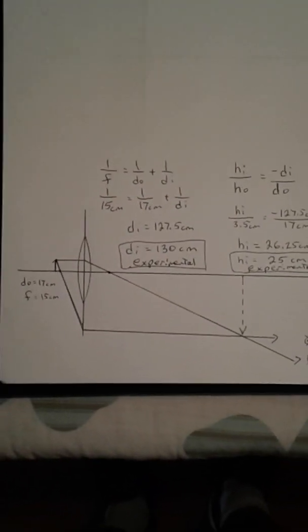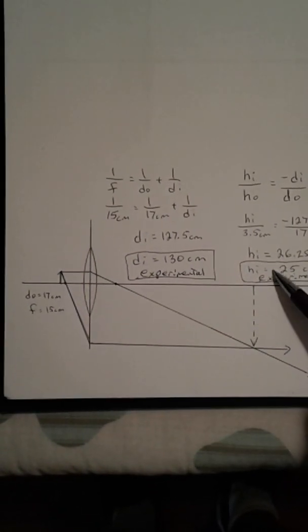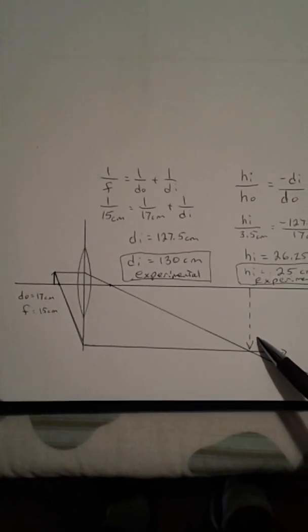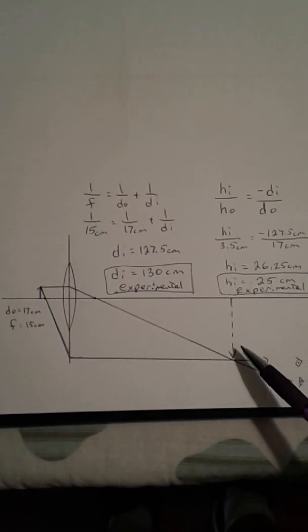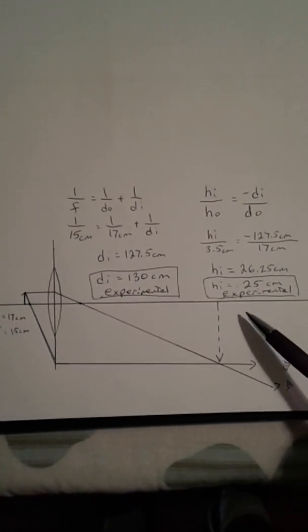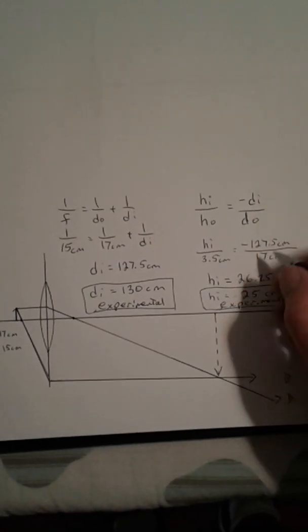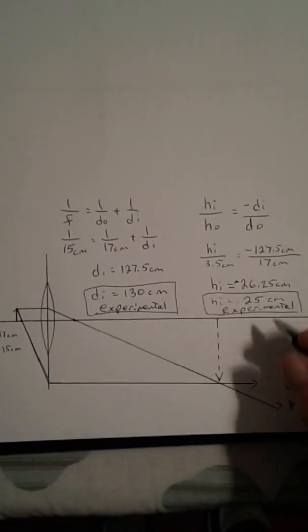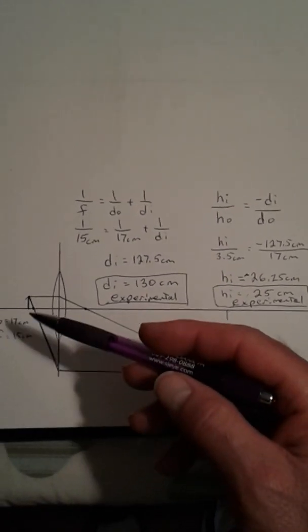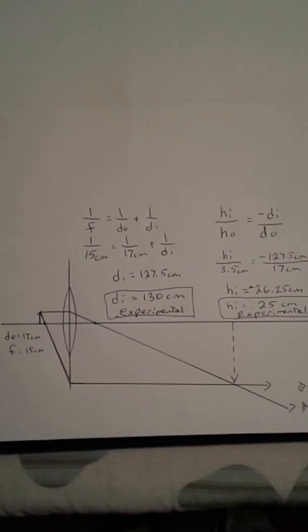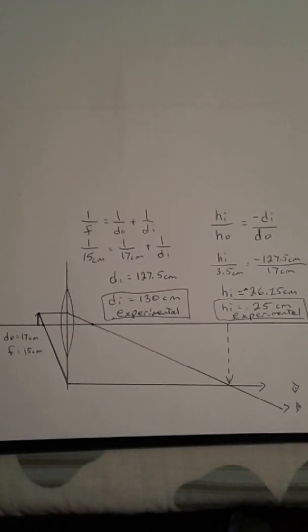And the diagram is pretty close too. Look how big the image is and look how far away it is. So this would work out if we used graph paper and drew it out exactly. I'd like to point out also that this should be, using the formula, this should be a negative sign because this is upside down. So it's a negative height versus a positive height on the object. So this is all working out pretty well.